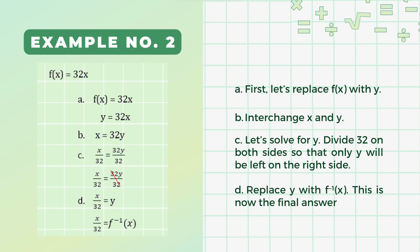Let's follow the same steps in solving this one. First, let's replace f(x) with y. Interchange x and y. Let's solve for y — we will divide by 32 on both sides so that only y will be left on the right side. Again, to denote that this is an inverse of the original function, we must replace y with f inverse of x. This is now the final answer.